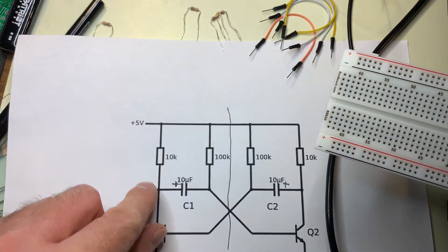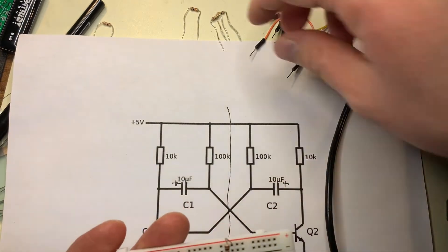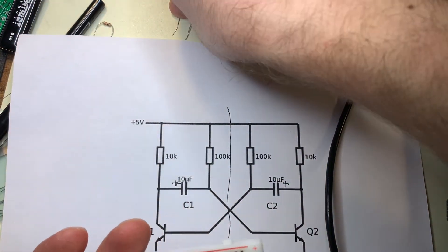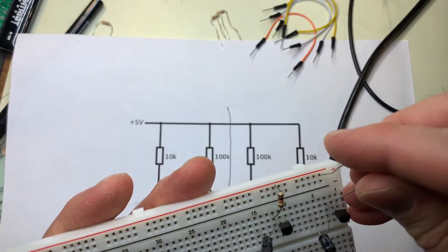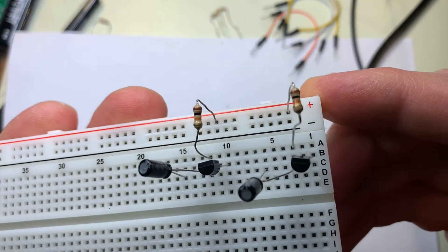And that's exactly how it shows in this diagram. We have the resistors connected to the capacitor and the transistor, and then the same for the other side. Just like that.